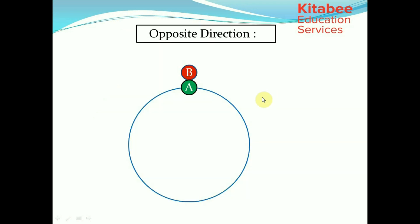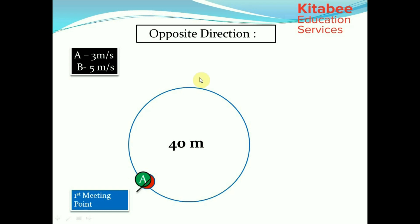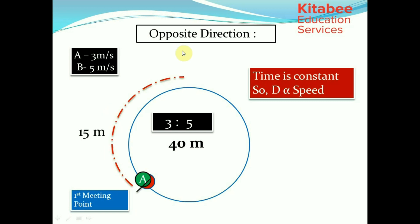Let's say there are two runners A and B running in the opposite direction. The track length is 40 meters and the speeds of A and B are 3 meters per second and 5 meters per second respectively. They start running and at the first meeting point, since both traveled for equal time, distance is proportional to speed. So distances are in the ratio 3:5, meaning A traveled 15 meters and B traveled 25 meters — dividing the 40 meters in the ratio 3:5.